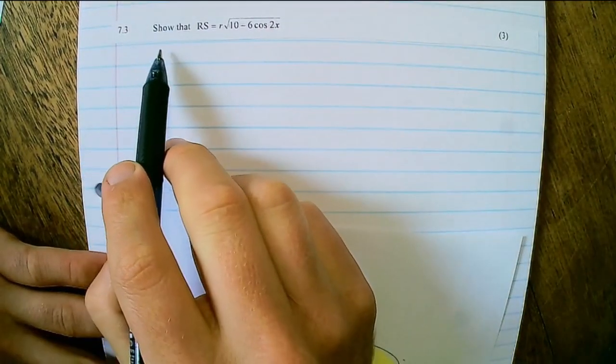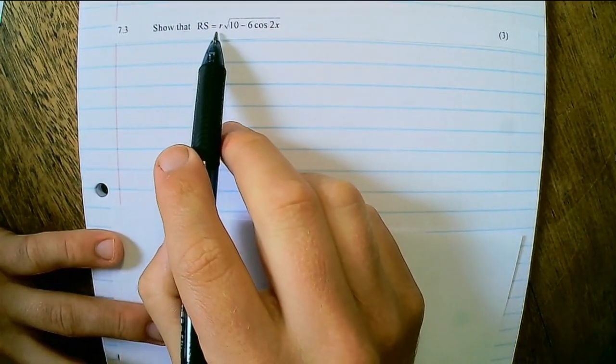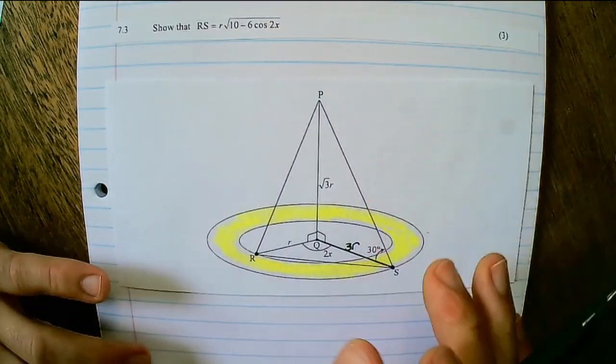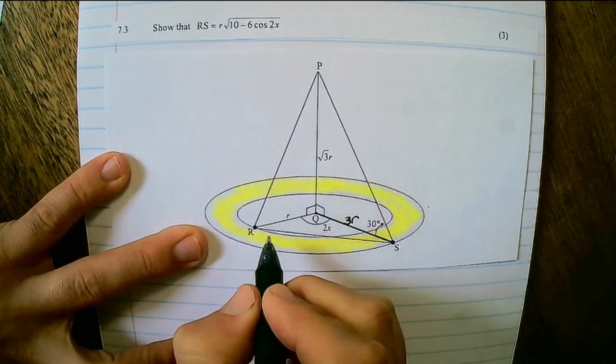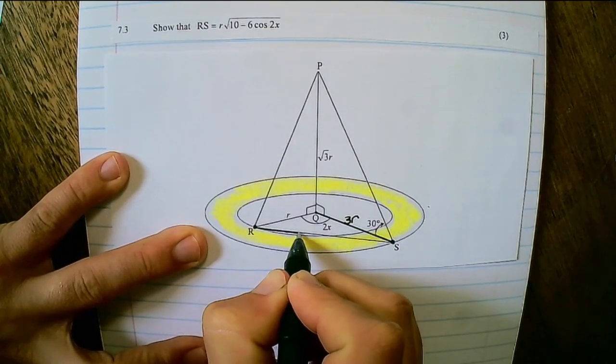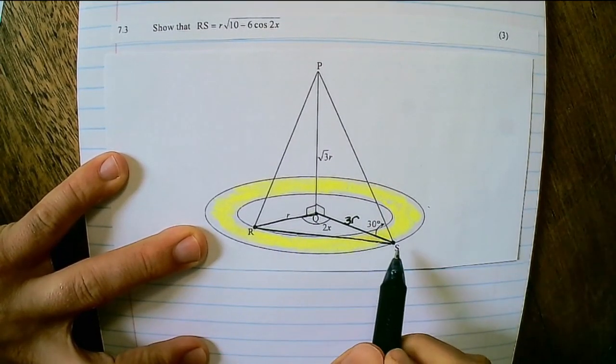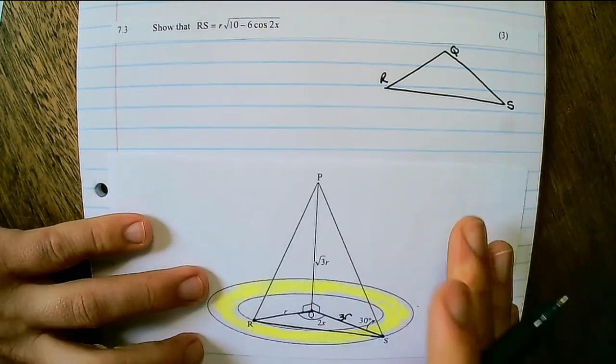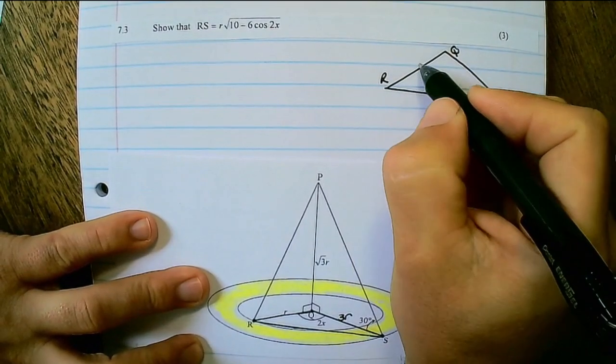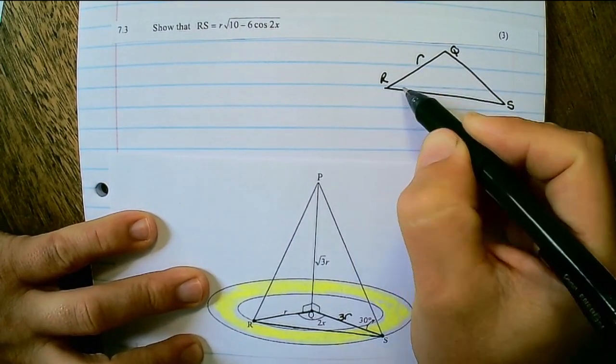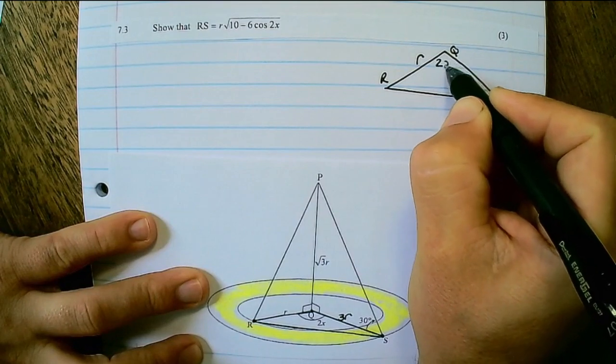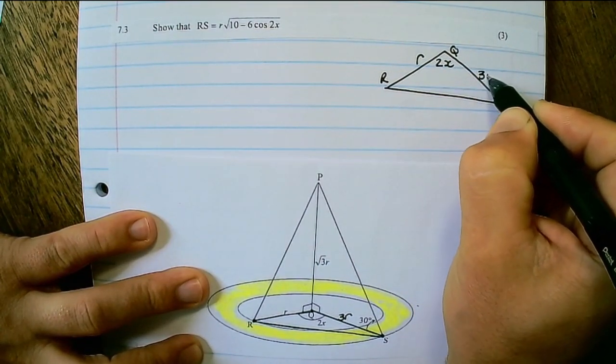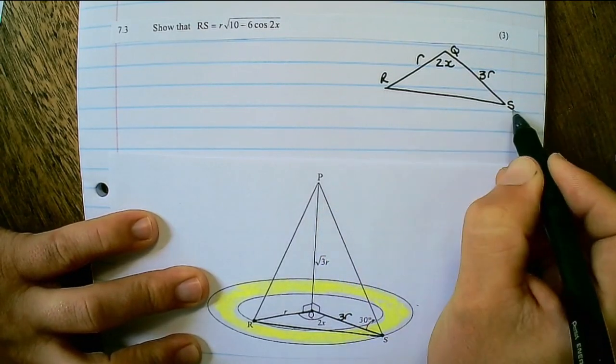7.3. Show that RS is equal to R square root of 10 minus 6 cos 2X. So we want to find the length of RS. So the information and the triangle which I would use is triangle RQS. We know that the length of RQ is R, and that the angle of RQS is given as 2X, and the length of QS is 3R.